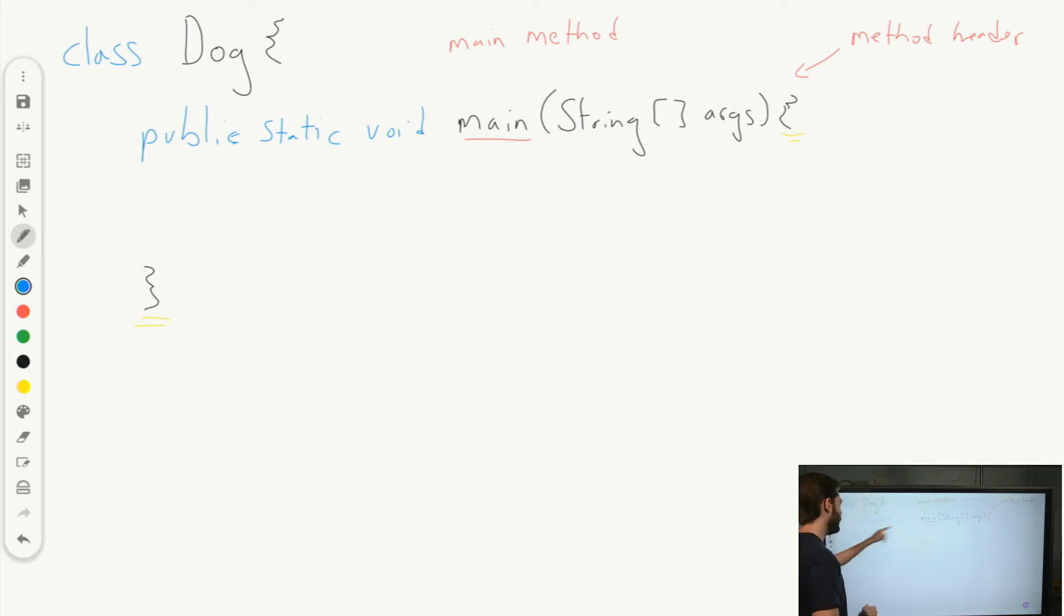So I'm going to create a method called bark that's going to print to the screen the dog barking. So how do we do that? First thing we need to do is we take a look at our main method here. And it can give us a guide on how to do this. The first thing is this word public. This is an accessor.